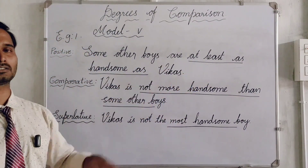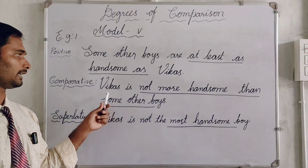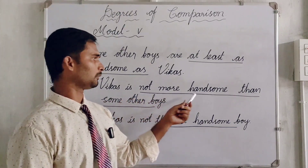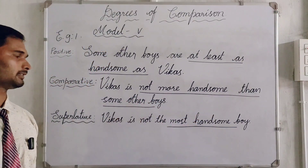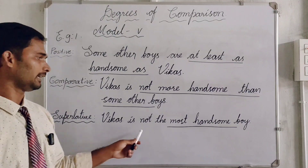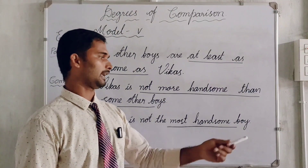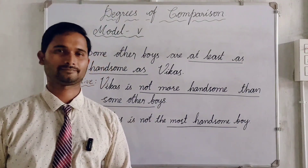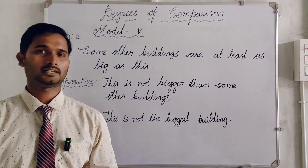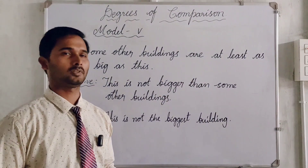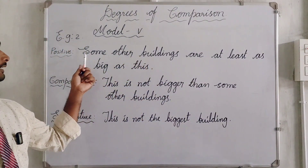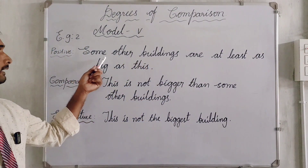Example: Some other boys are at least as handsome as Vikas. The comparative form: Vikas is not more handsome than some other boys. And the superlative: Vikas is not the most handsome boy. Let us learn some more examples of model number five.